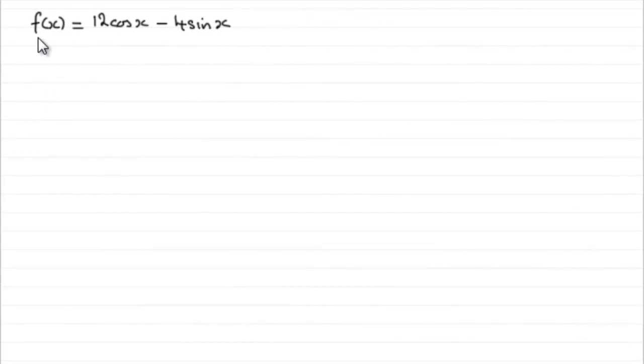Okay, now we're given that f of x equals 12 cos x minus 4 sin x, and asked to express this in the form r cos of x plus alpha.